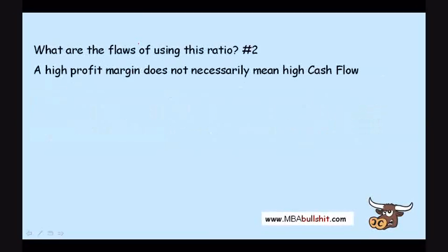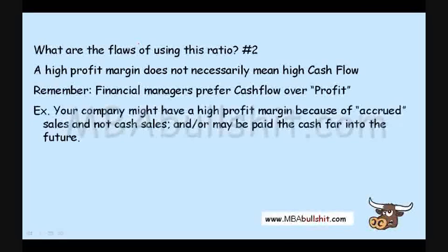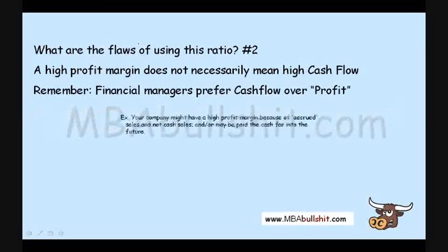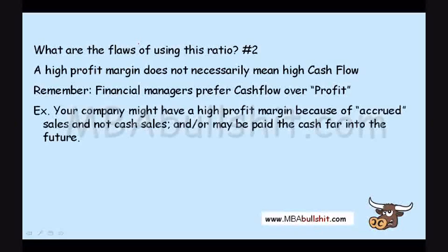The second flaw in using this ratio is that a high profit margin does not necessarily mean high cash flow. Financial managers prefer cash flow over profit. In some cases, a company might have a high profit margin because of accrued sales and not cash sales. Accrued sales means you made the sale but the customer hasn't paid you yet in cash. If you already made the sale and the customer has not yet paid you, it will still appear as a sale in your income statement, and you might not benefit from the cash portion of that profit until far into the future.